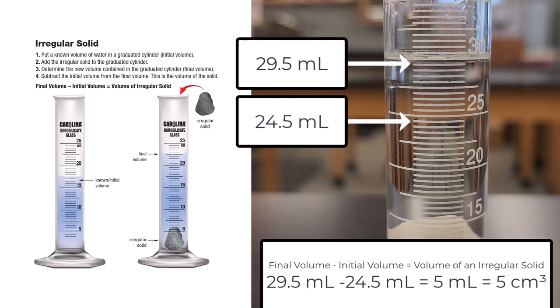Subtract the initial volume from the final volume. This provides the volume of the irregular object. In this case, it is 5 mL or 5 cm³.